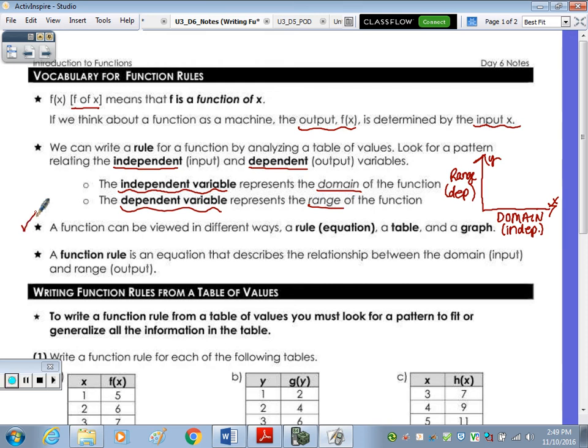A function rule is an equation that describes the relationship between your domain and range. I want you to take a look at the tables in number 1. There's 3, A, B, and C. And then the tables in number 2, A, B, and C. If you're watching the video, pause it. You're going to look at the graphs. What's similar between, in number 1, the tables for A, B, and C? They all are similar in some way. And then A, B, and C in number 2 are different than those in number 1. What are the similarities and what are the differences?